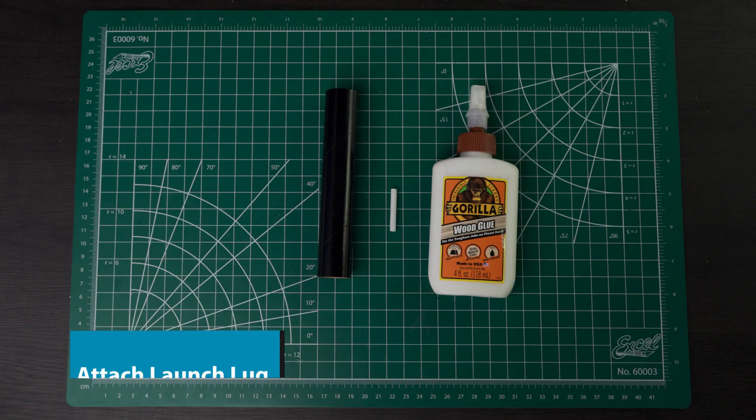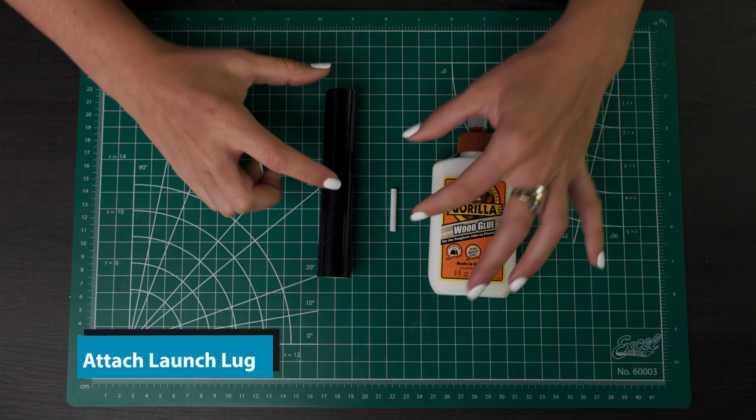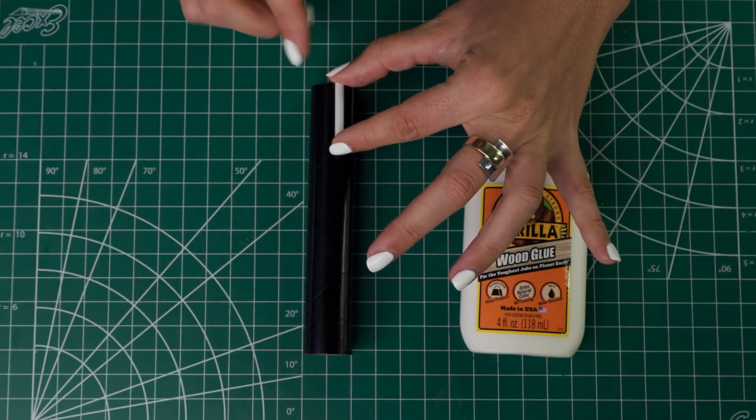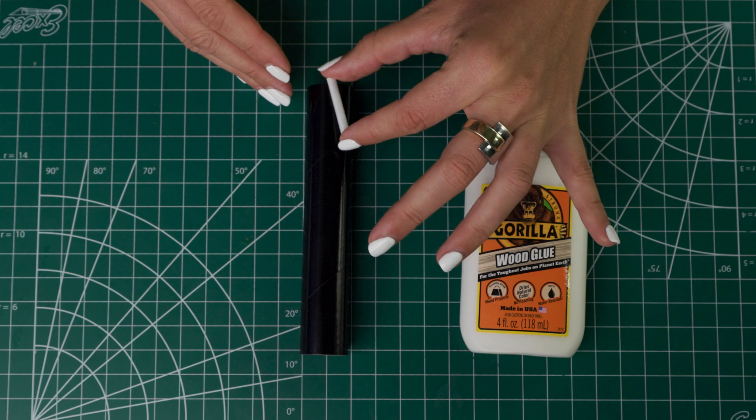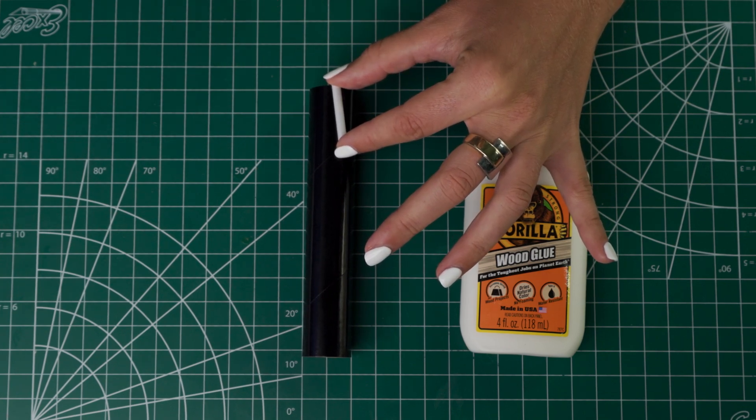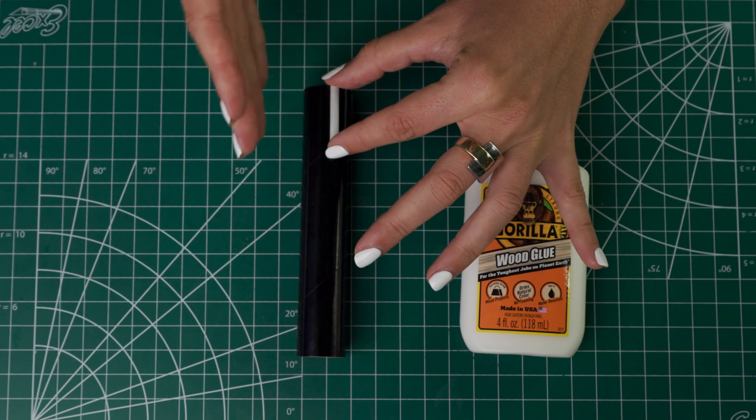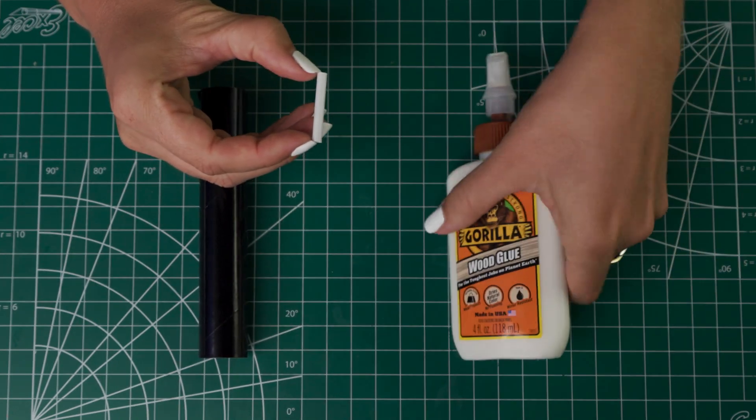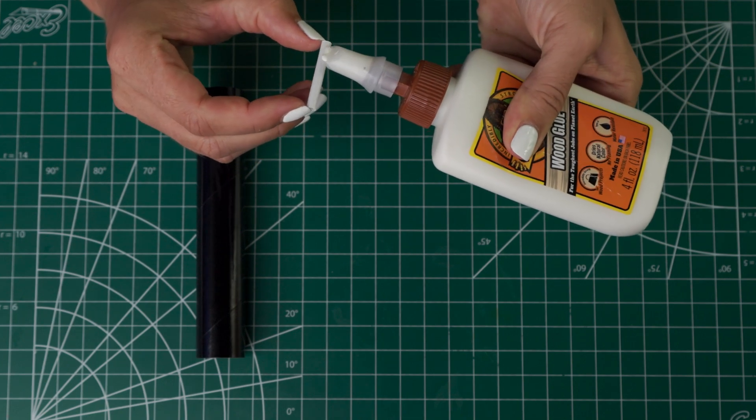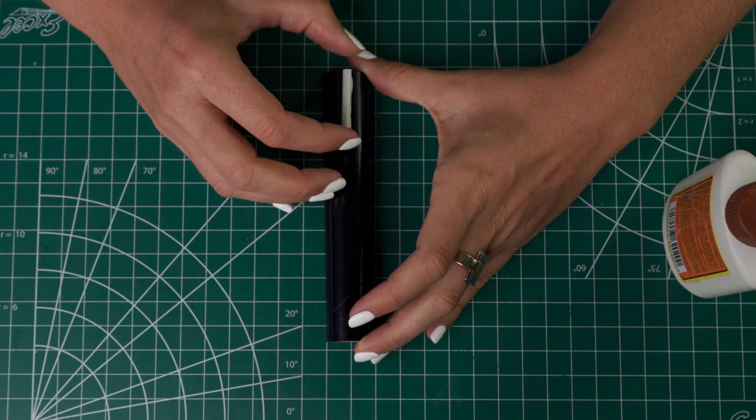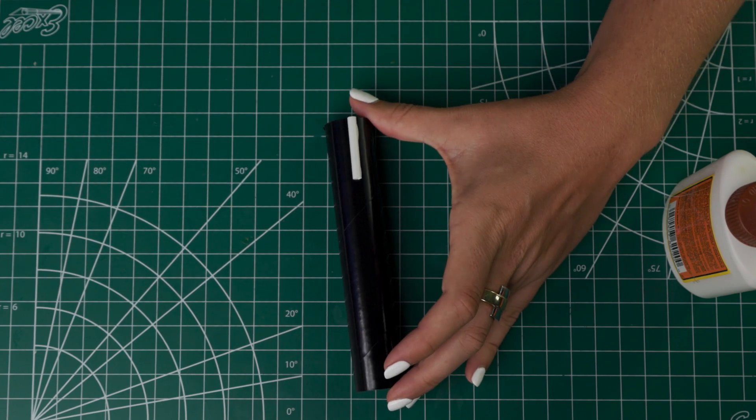Now we will attach the launch lug to the body tube. And what's important here, we're going to attach it at the very end, you want to make sure that it's parallel to the body tube. If it's crooked, then your rocket's not going to go on the launch rod straight and you're not going to be able to launch it. So make sure that it's parallel to the body tube. You're just going to put some glue on here and then attach it. Then let that dry.